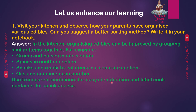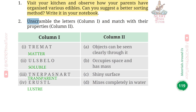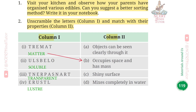Q2: Unscramble the letters and match with their properties. 1. Matter — occupies space and has mass. 2. Soluble — mixes completely in water. 3. Transparent — objects can be seen clearly through it. 4. Lustre — shiny surface.